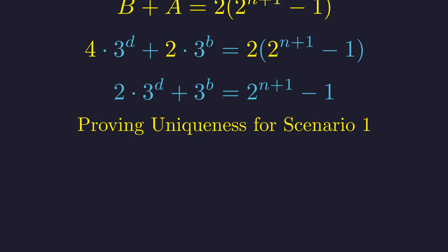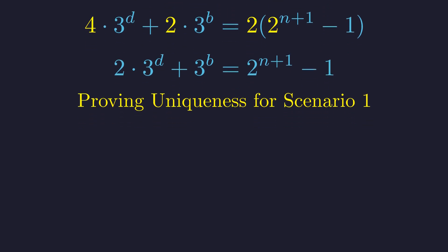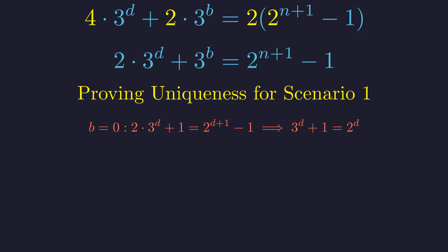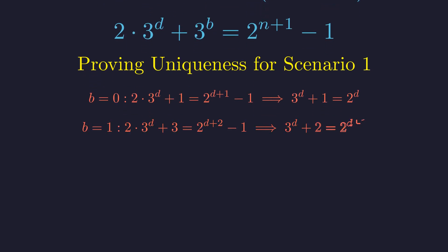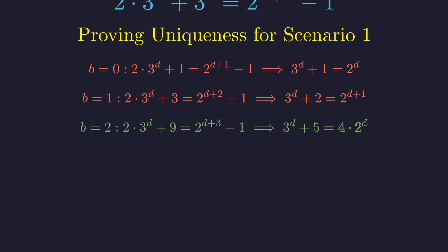We must now prove that b equals 2 and d equals 3 is the only solution. We will analyze the equation for different values of b. For b equals 0, the equation simplifies to 3 to the d plus 1 equals 2 to the d. This has no solution for non-negative integers d. For b equals 1, we check values. d equals 1 gives 5 versus 4, d equals 2 gives 11 versus 8. For any larger d, the left side grows much faster. A formal proof by induction confirms no solutions exist here. For b equals 2, we test d. For d equals 3, we get 27 plus 5 equals 32 on the left and 4 times 8 equals 32 on the right. We have found a solution.